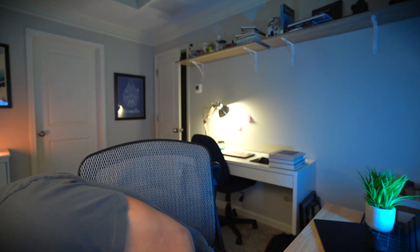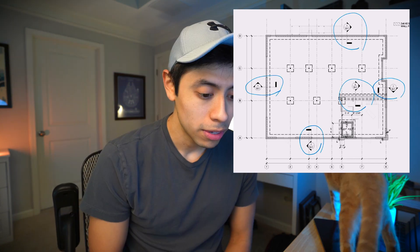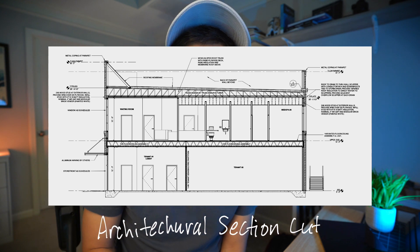On the plans, you'll typically have details being called out — usually the detail number followed by the page number. This helps you see how members are connected and how they're oriented, because the plan view is a great bird's-eye view of the building from above, but sometimes you need a side-angle view, which is what section cuts are for. You want as few details as possible — ideally a typical detail that can be applied throughout the building.